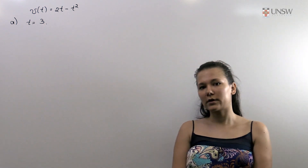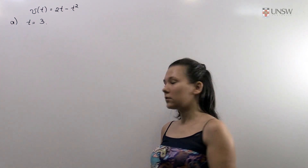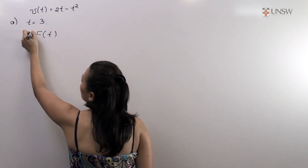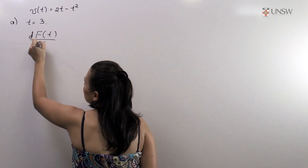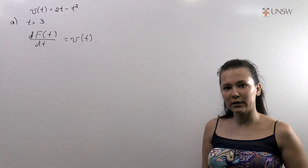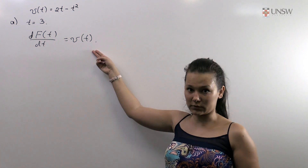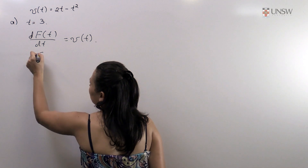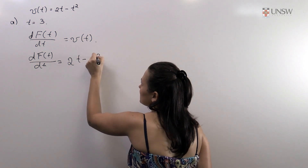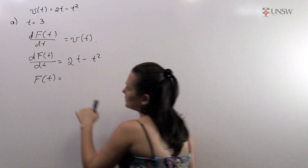To find this distance we need to find the equation of displacement of our particle. We know that displacement, denoted by f, has its derivative with respect to time equal to the velocity of the particle. So to find the equation of displacement we need to find the antiderivative of our velocity function. So we have df(t)/dt equals 2t minus t squared, and f(t) is then just the antiderivative.